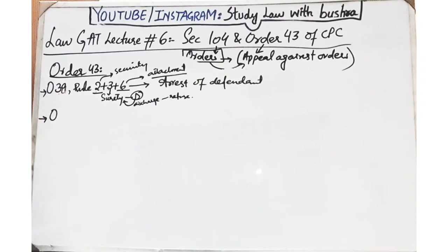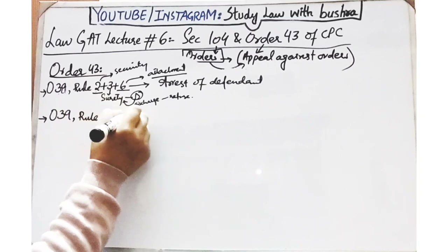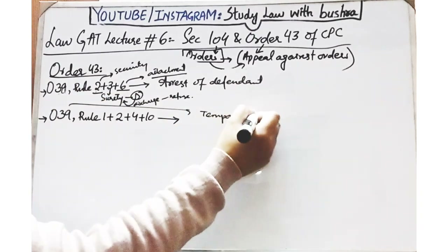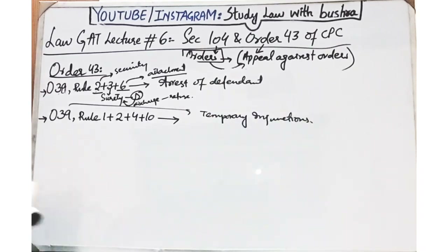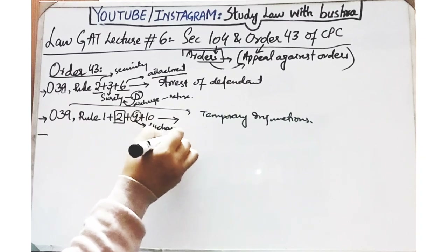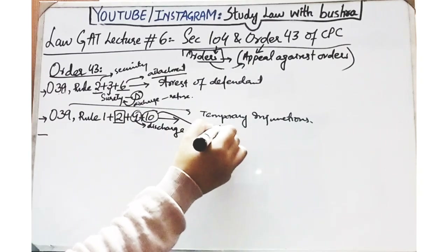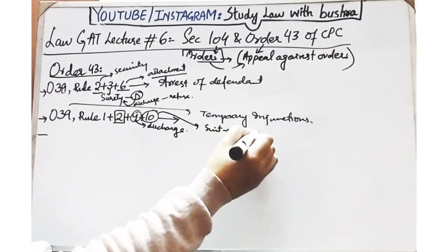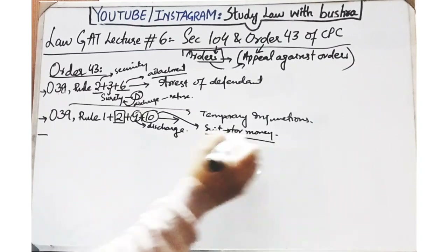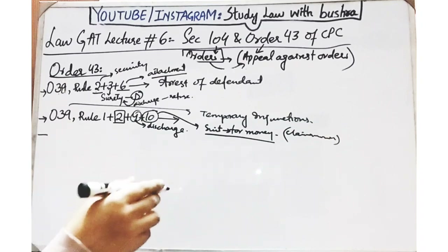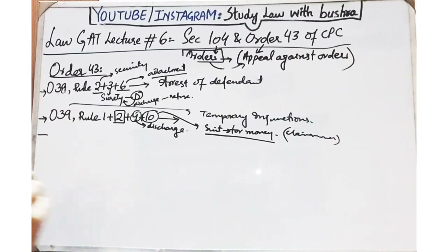Order 39 Rules 1, 2, 4 aur 10 - Order 39 basically deal kar raha hai temporary injunction se. Rule 4 mein yeh kaha gaya hai ke jahan par court injunction se discharge kar deti hai, to aise discharge par bhi aap appeal file kar sakte ho. Rule 10 basically kehta hai ke jahan par court security demand kar rahi hai - means to say ke jitni us suit ki property hai, agar utni hi security aap court mein submit kar den, to aapko stay de diya jata hai. To us security demand se related bhi aap appeal file kar sakte hain.